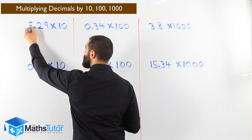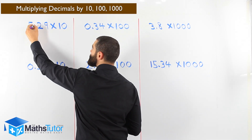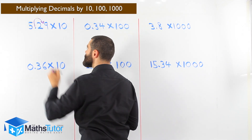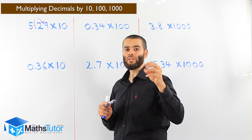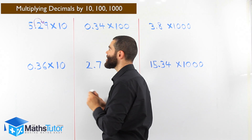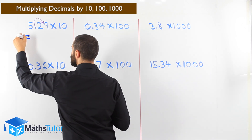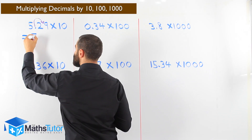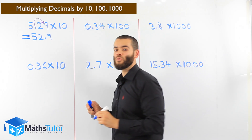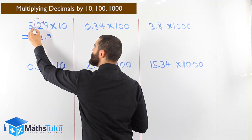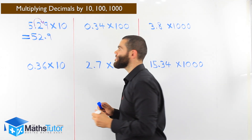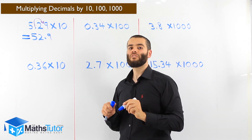5.29 times ten. Ten has one zero, so we move once to the right. We carry the point and move it once to the right. Our answer will be 52.9. We moved the point once to the right because we're multiplying by ten — ten has one zero, so we move once to the right.